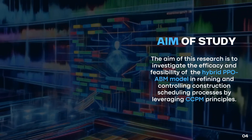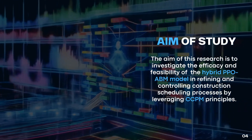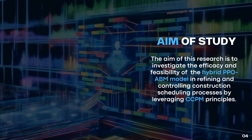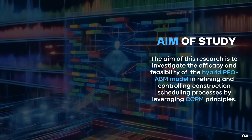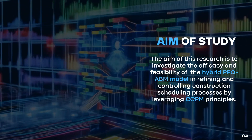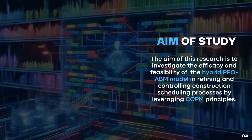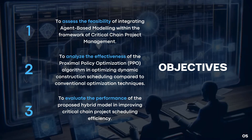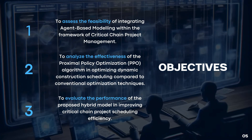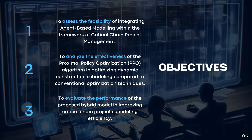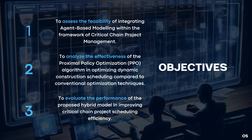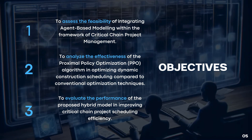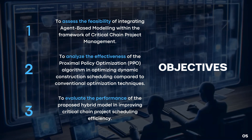The aim of this research is to investigate the efficacy and feasibility of the hybrid PPO-ABM model in refining and controlling construction scheduling processes by leveraging critical chain project management principles. This study includes assessing the feasibility of agent-based modeling integration, analyzing PPO's effectiveness in dynamic scheduling, and assessing the hybrid model's performance.